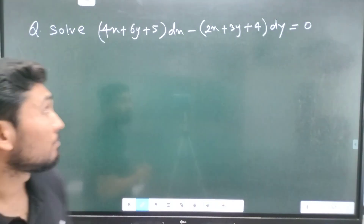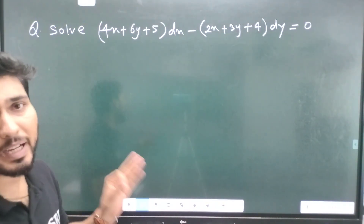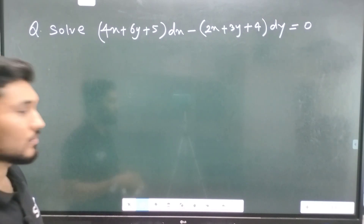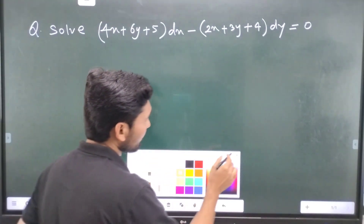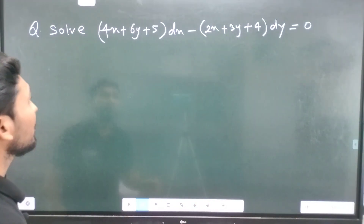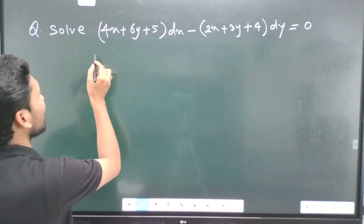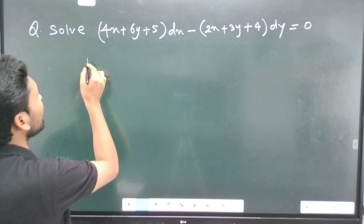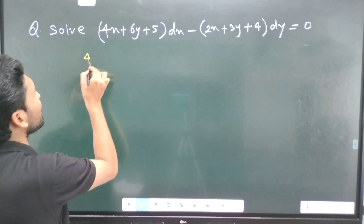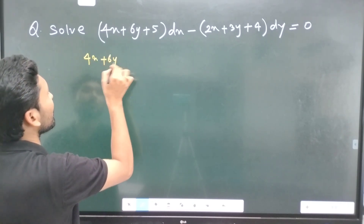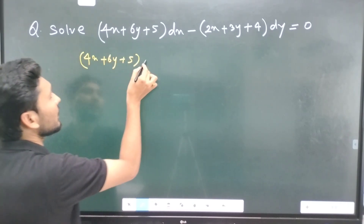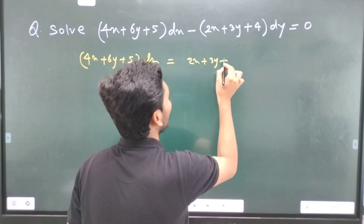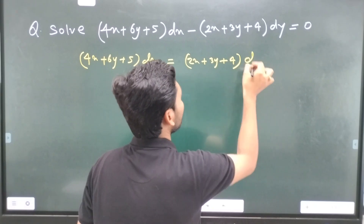The question is: 4x plus 6y plus 5, dx, minus 2x plus 3y plus 4, dy, is equal to 0. I can write this as 4x plus 6y plus 5, dx, equals 2x plus 3y plus 4, dy.